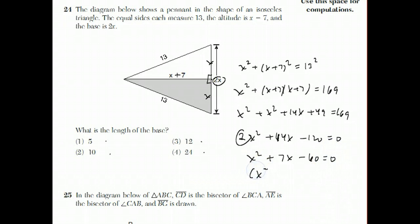x squared plus 7x minus 60 equals 0. And 60 is 5 times 12, and 12 minus 5 is 7. So x plus 12, x minus 5, which means x equals negative 12. We reject that because it's the length of something, or x equals 5, which is the answer to this question.